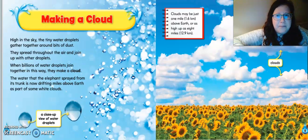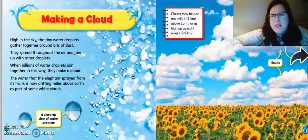Clouds may just be one mile above the earth or as high as eight miles. And the clouds can tell us something about the weather. These clouds here are called cumulus clouds. And they let us know that it's going to be a nice day outside.